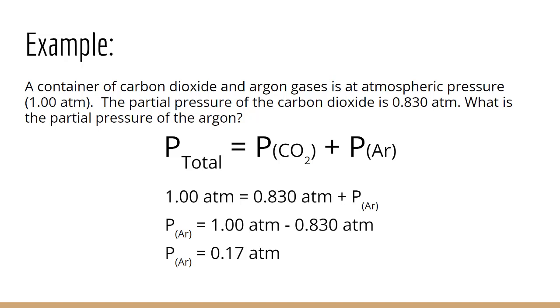Well, I know that the total pressure is the sum of the two partial pressures. So really all I have to do is subtract the pressure of the carbon dioxide from atmospheric pressure, which is the total pressure. And I get the pressure of argon, which is 0.17 atmospheres. Super easy.